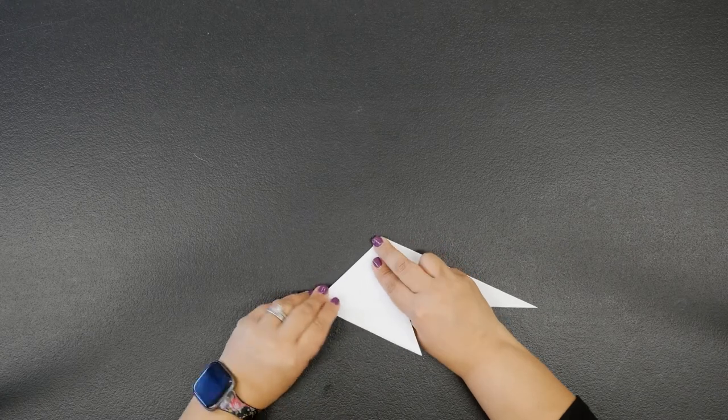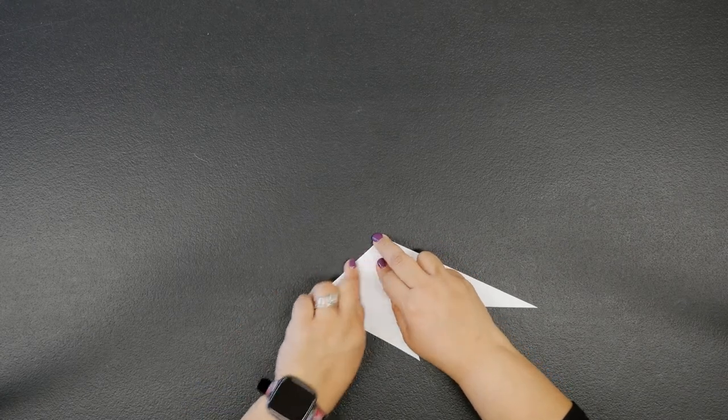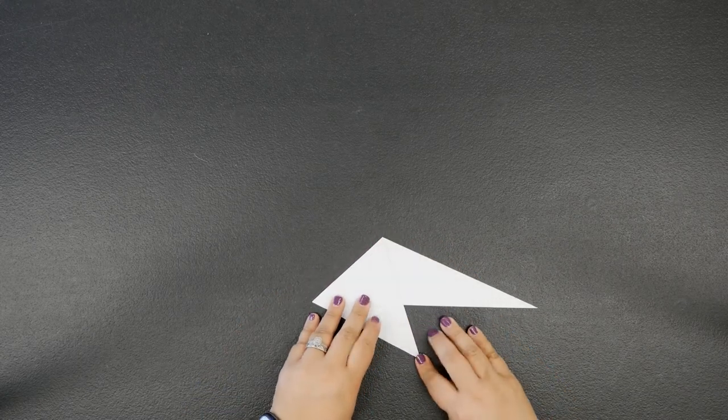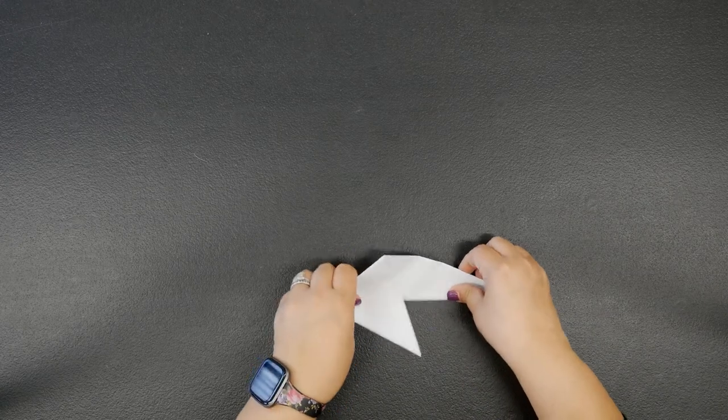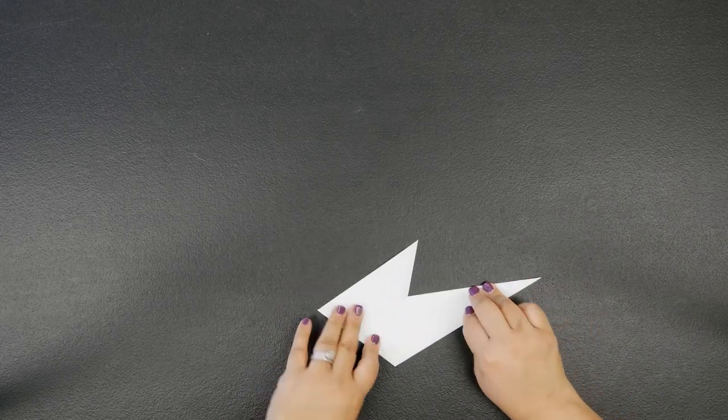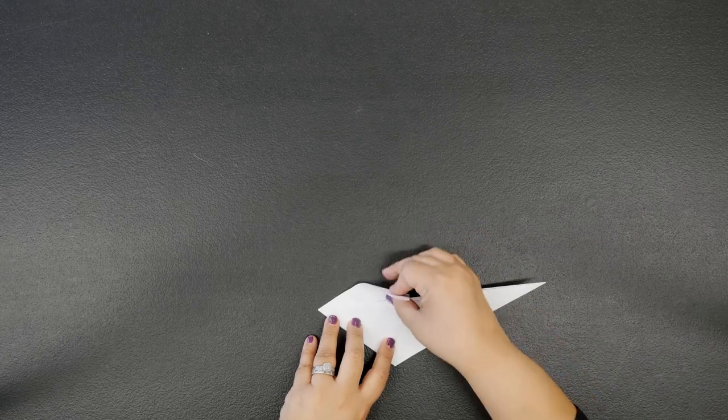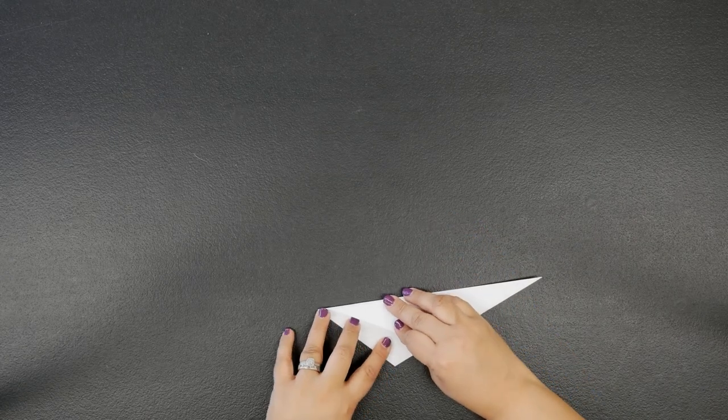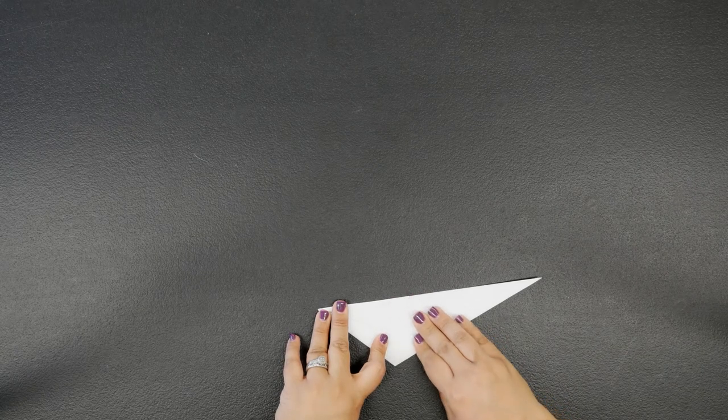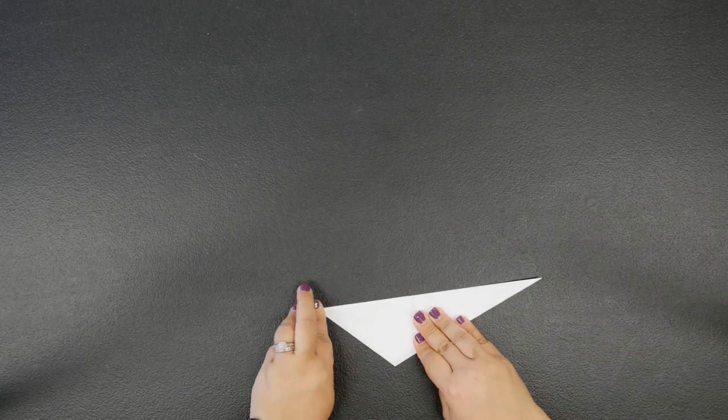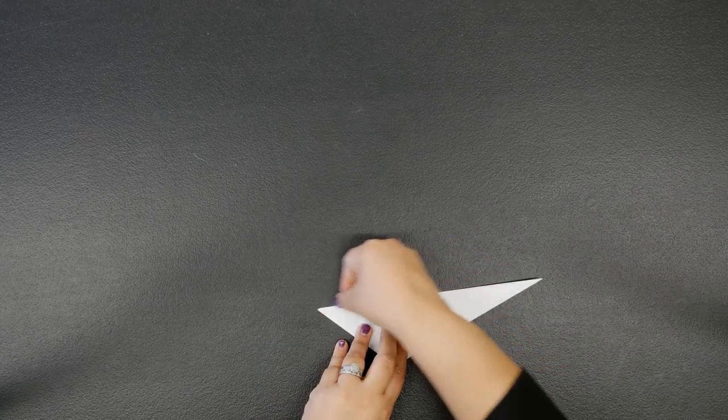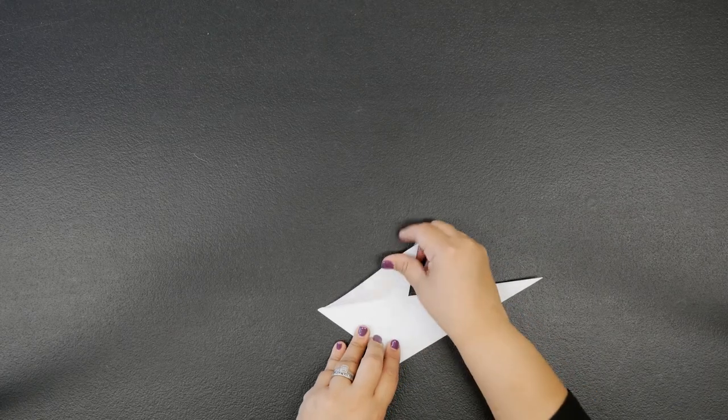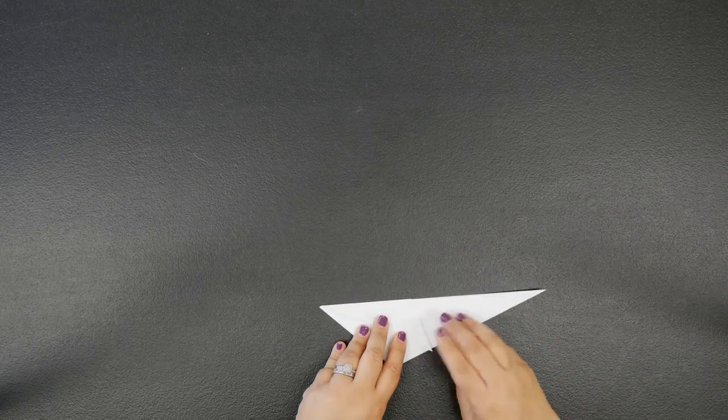We're going to crease it there, and now we're going to flip the entire piece over. The top part that we've been working with, go ahead and bring that little flap over just like this, so bring this downward like this.